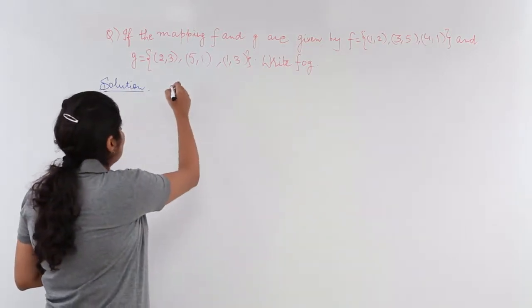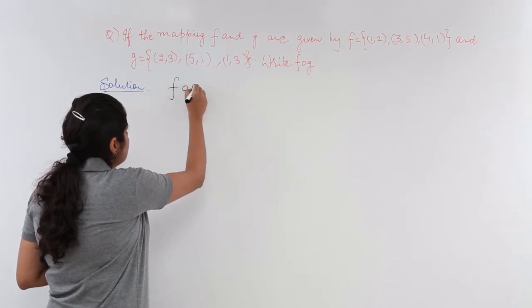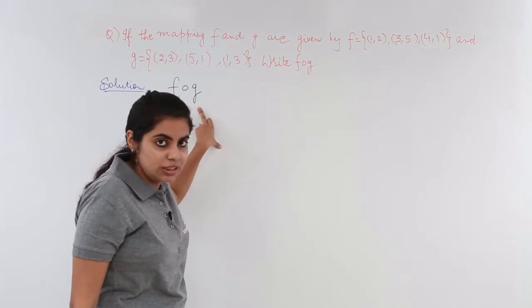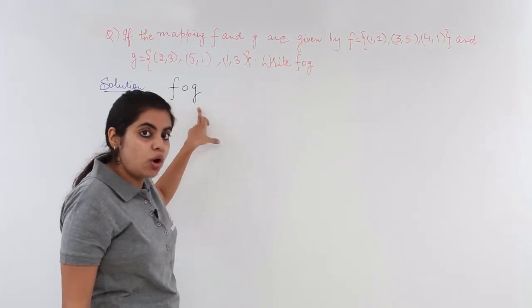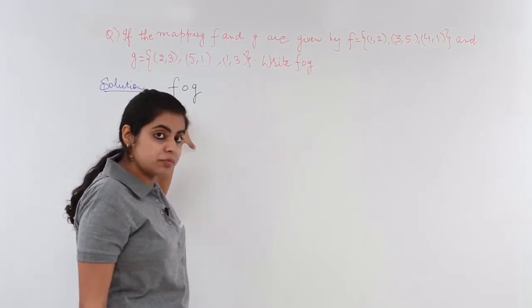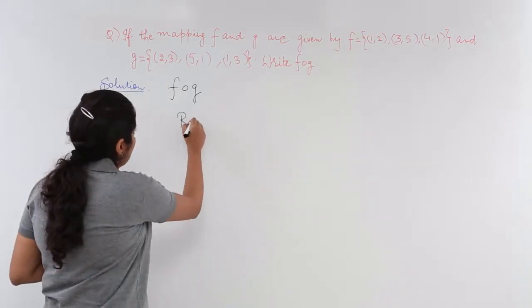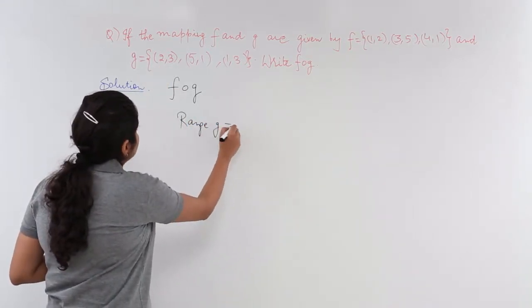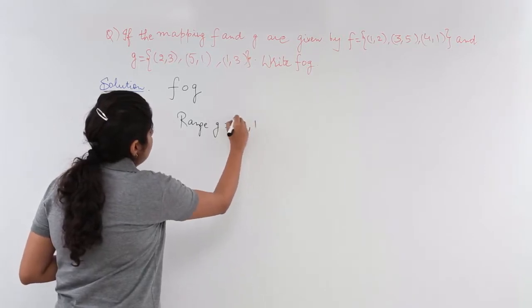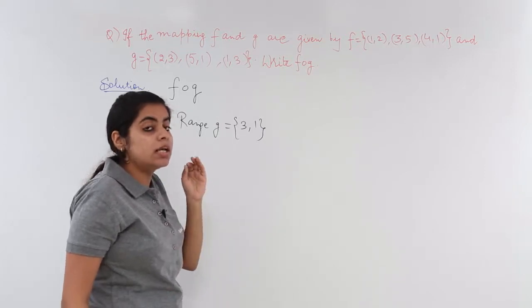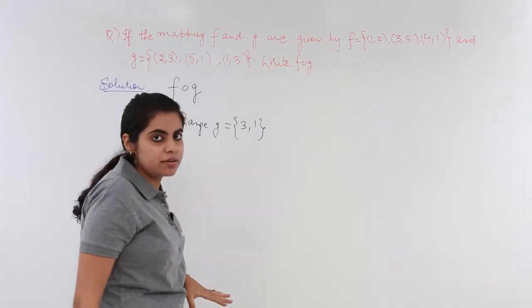So if you want to check whether FOG exists you need to see is range of G a subset of domain of F. So what is range of G? Range of G is 3, 1 and 3. So since 3 is repeating we do not write it again. In the ordered pair the second element is the range.